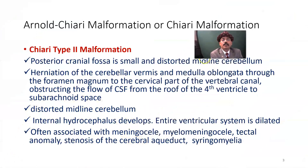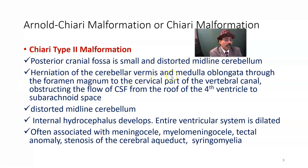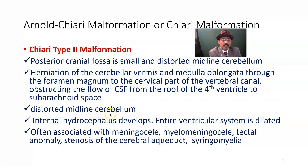Chiari type 2 malformation: the posterior cranial fossa is small with a distorted midline cerebellum. There is herniation of the cerebellum, vermis, and medulla oblongata through the foramen magnum into the cervical part of the vertebral canal. This causes a lot of crowding with additional structures overcrowding the passage, leading to nerve compression. Internal hydrocephalus develops and the entire ventricular system is dilated.